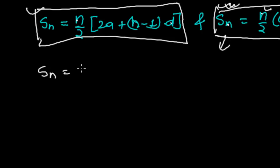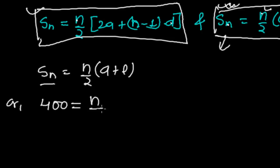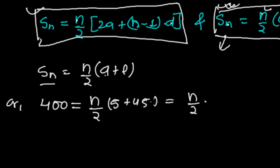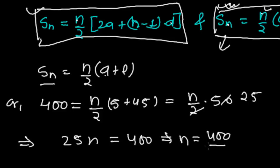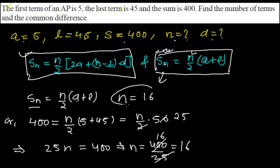Applying S_n = n/2 × (a + l): we have 400 = n/2 × (5 + 45), which gives 400 = n/2 × 50. This simplifies to 25n = 400, so n = 400 ÷ 25 = 16. The total number of terms is 16.